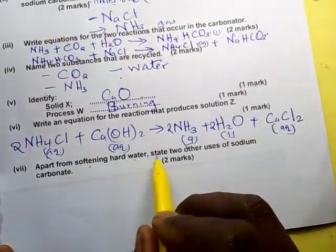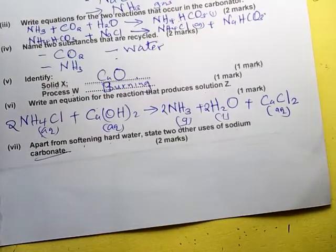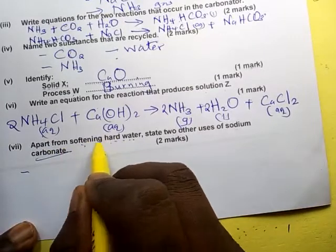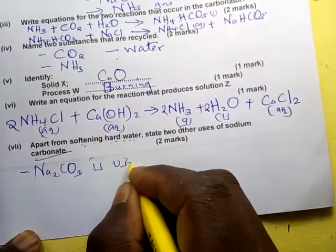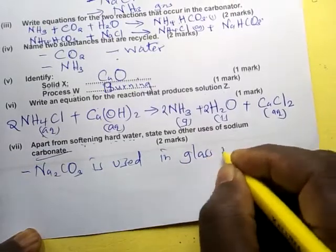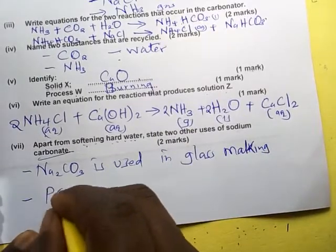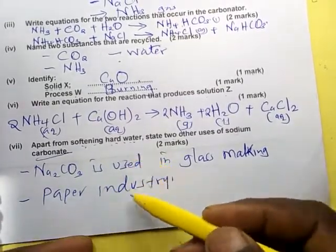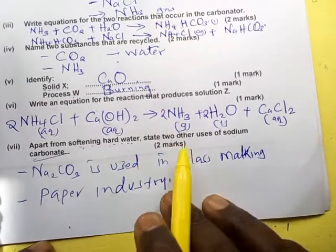Apart from softening hard water, state other uses of sodium carbonate. Sodium carbonate is used in glass making and in the paper industry. You should know the uses of both sodium carbonate and the sodium hydrogen carbonate formed in the process.